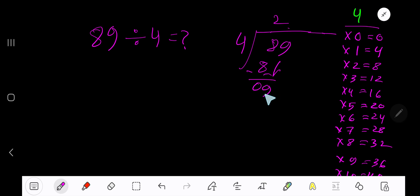Bring down another digit, 9. 4 goes into 9. How many times? 3 times is 12, which is greater. So 2 times. Write 2. 2 times 4, 8. Subtract 1.